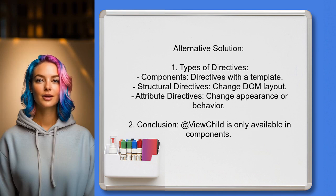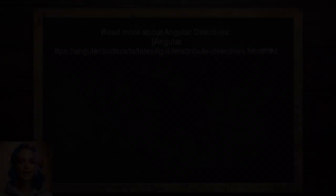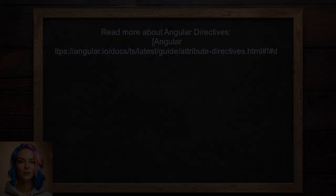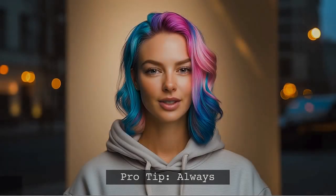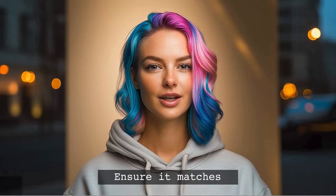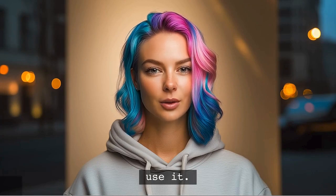One user explains that there are three types of directives in Angular: components, structural directives, and attribute directives. They clarify that only components have a template, which is why @ViewChild works in components but not in directives. For more details, you can read about Angular directives in the official documentation. Here's a pro tip: always double-check your directive selector and ensure it matches the template where you're trying to use it — this small detail can save you a lot of headaches.